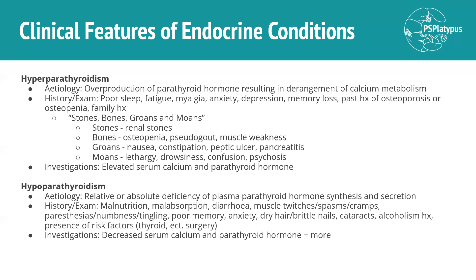Hypoparathyroidism is a relative or absolute deficiency of parathyroid hormone synthesis and secretion. History and exam findings include malnutrition, malabsorption, diarrhea, muscle twitches, spasms, cramps, paresthesia, numbness, tingling, poor memory, anxiety, dry hair, brittle nails, and cataracts. You might also see alcoholism in the history, as well as risk factors such as prior thyroid surgery. Investigations show the reverse: decreased serum calcium and parathyroid hormone help diagnose it.